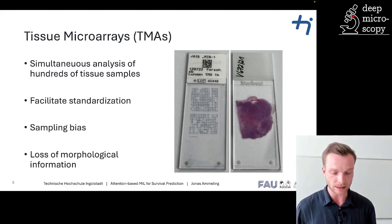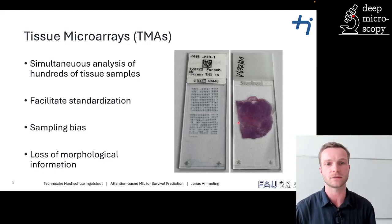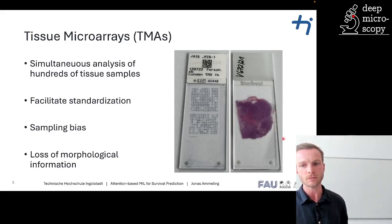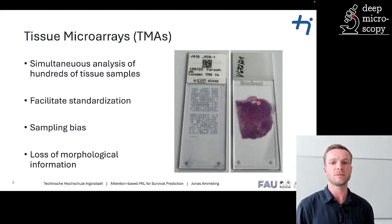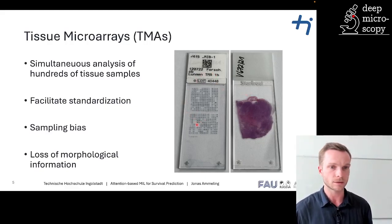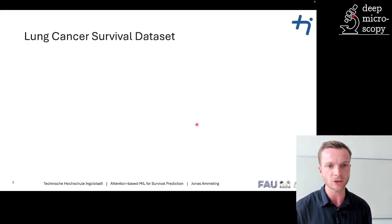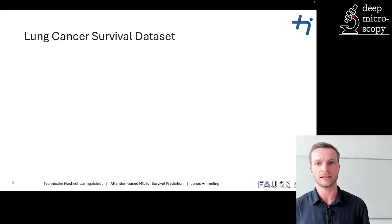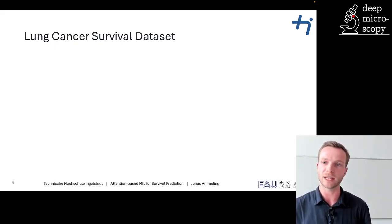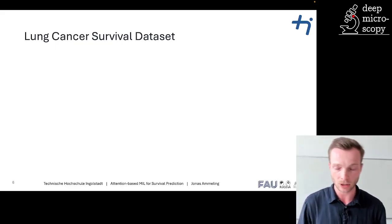Recently, a handful of methods were proposed that use whole-slide images for survival prediction. However, we were interested in whether these methods are also applicable on tissue microarrays, which offer a lot less tissue information per patient. In order to do so, we created a dataset consisting of at most three cuts from three different tissue microarray slides, with three cores per patient on each slide.